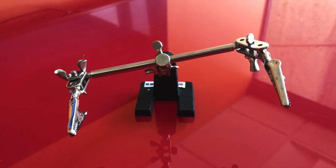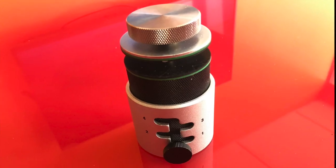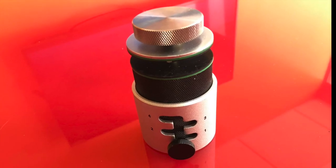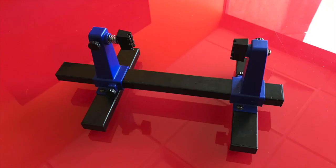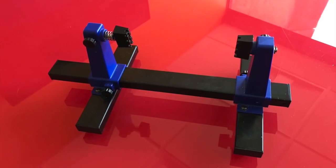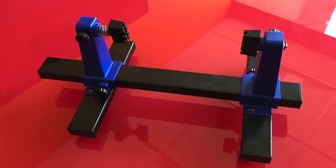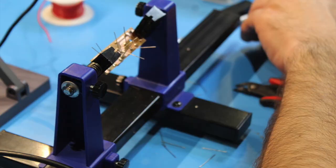The first is called helping hands. The second is the omnivise. You can check both of these things out from the tool crib. The last option is the adjustable circuit board holder. One of these is located at every soldering station in the makerspace.